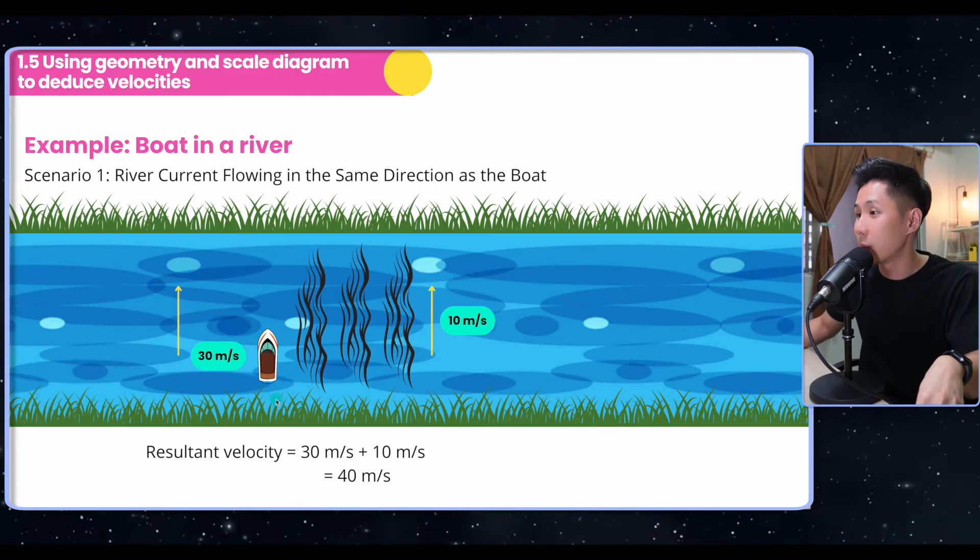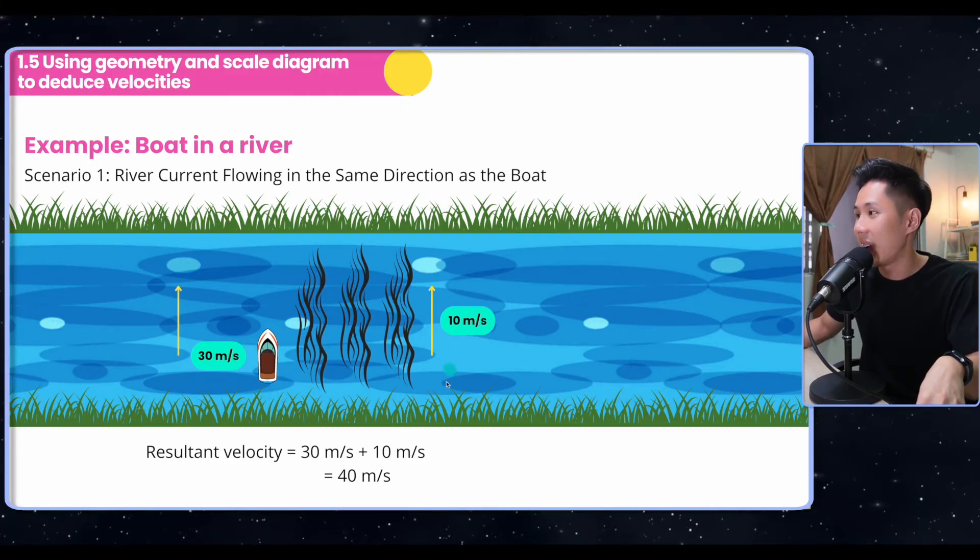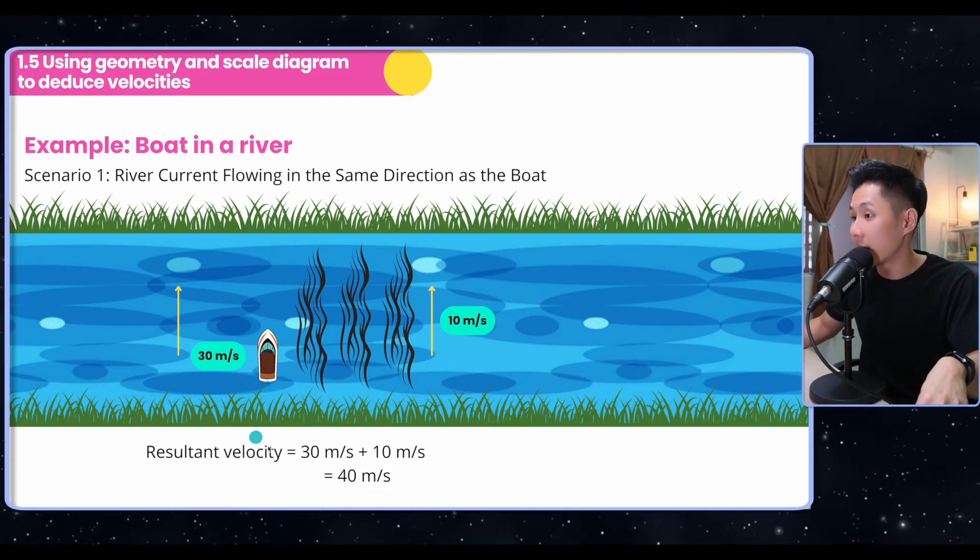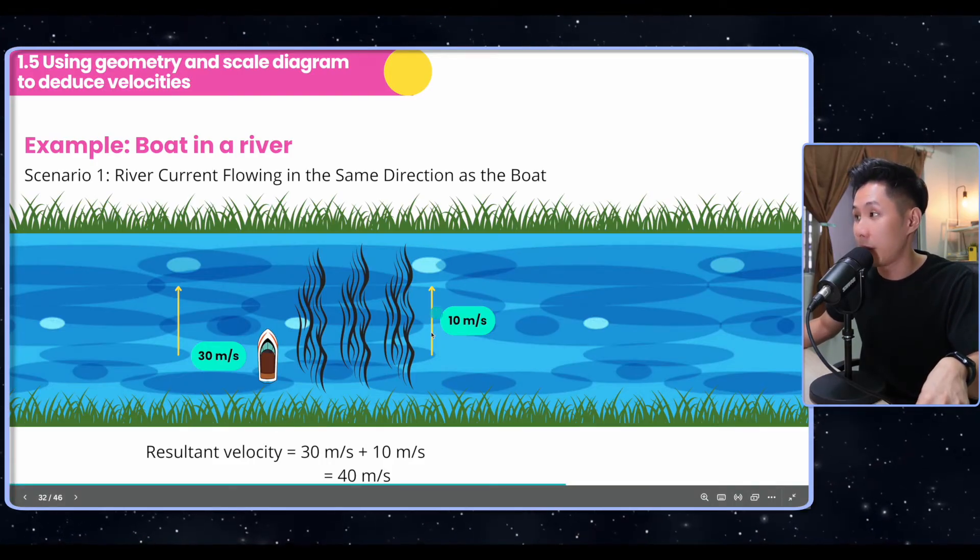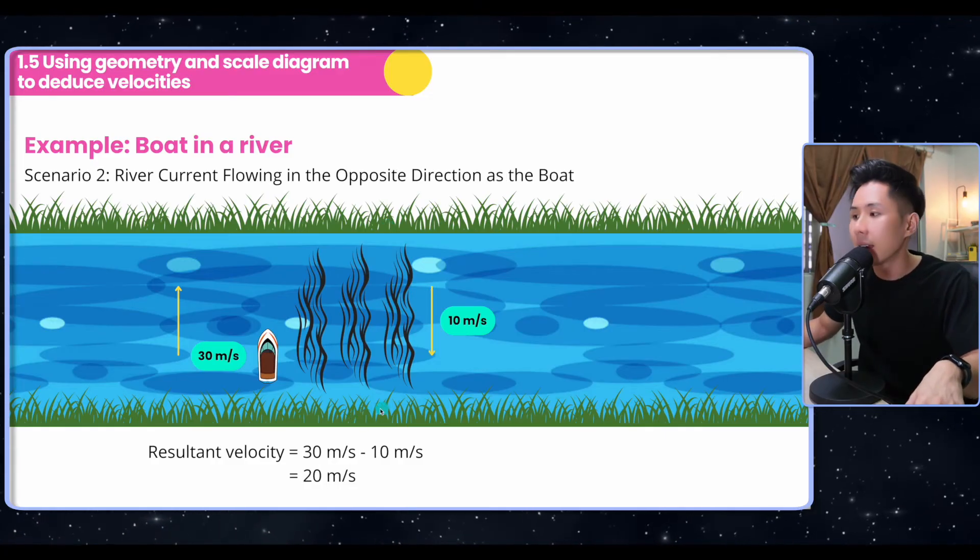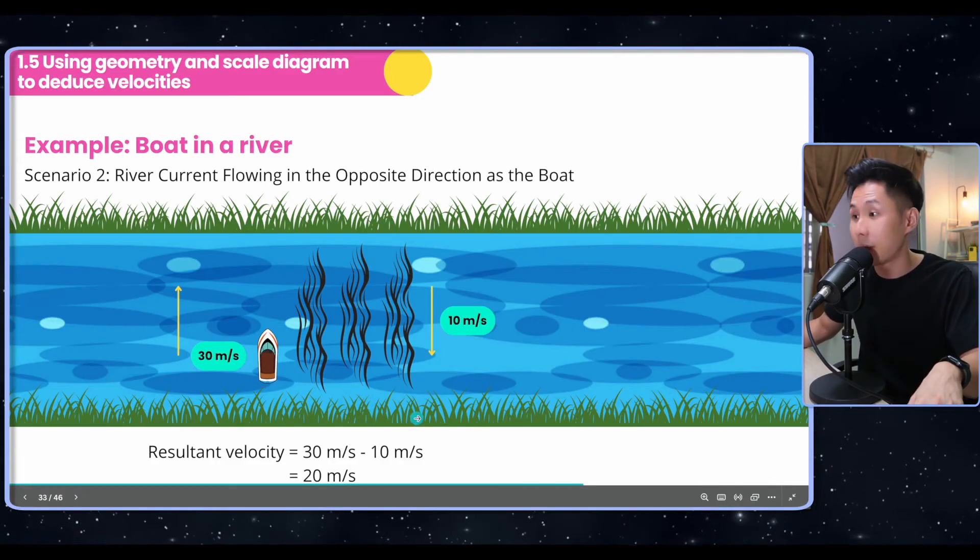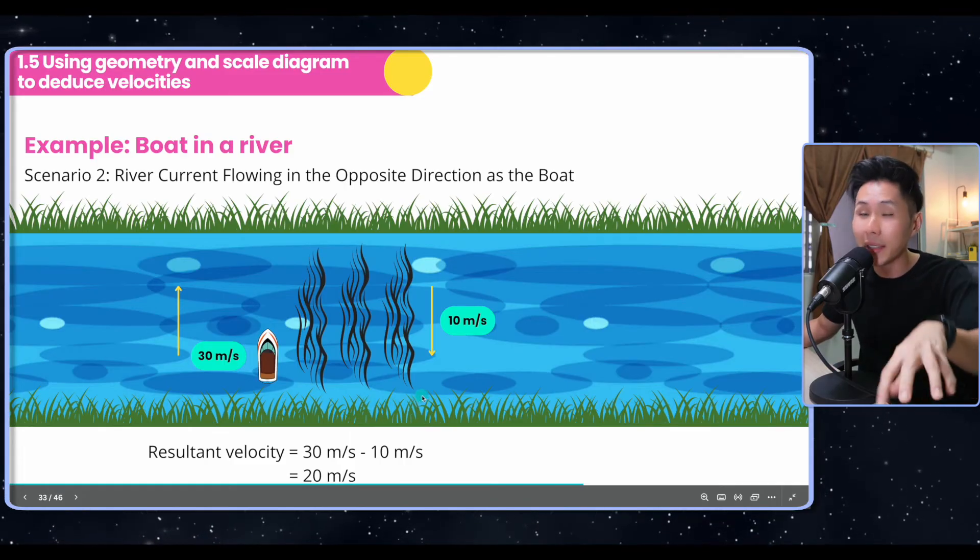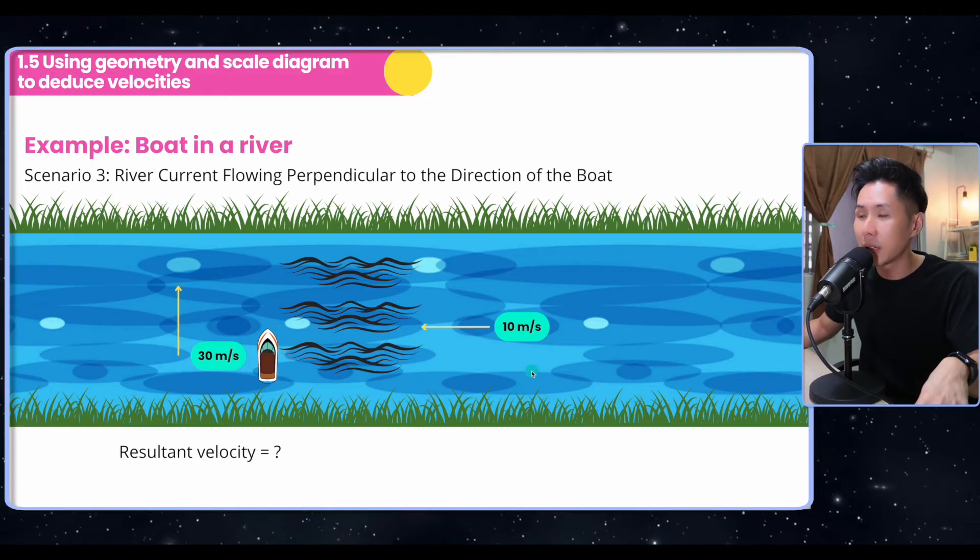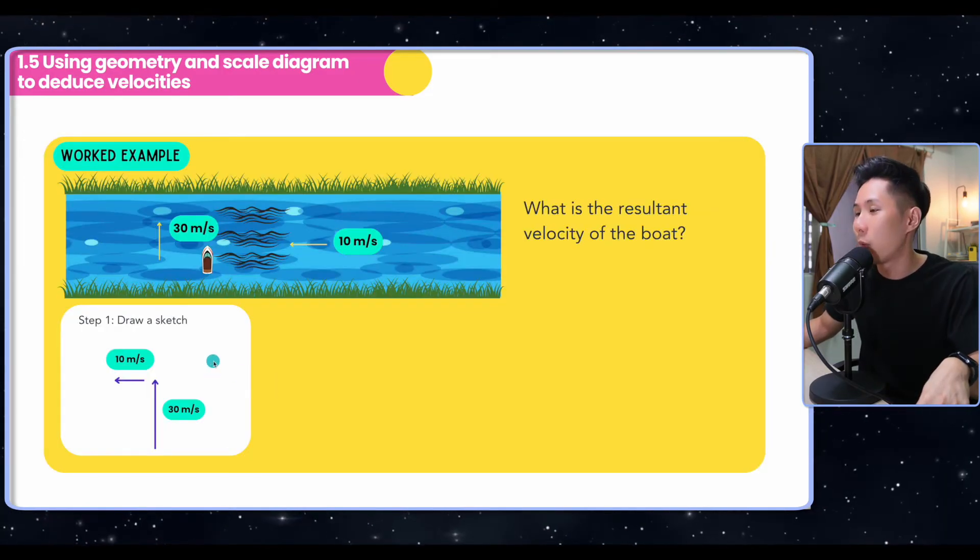That's how we use geometry and scale diagrams to deduce displacement. We can do the same thing for velocity. In this case here, I have a boat traveling vertically and the water is flowing at the same direction as the boat. So the resulting velocity we can just sum them up, which is 40. But if the water is flowing in another direction, that's when we need to minus them to find out the resultant velocity. That's still considered pretty easy.